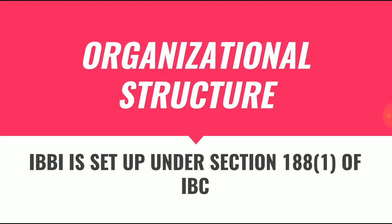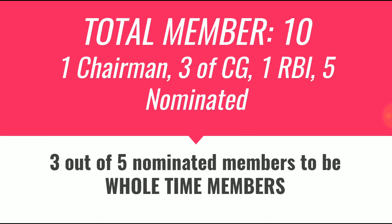Now let us understand the organizational structure of IBBI. IBBI is set up under section 188(1) of the Insolvency and Bankruptcy Code. There are totally 10 members: one chairman, three members of the central government, one ex-officio member nominated by the Reserve Bank of India, and five members nominated by the central government. Of these five members, three have to be whole-time members — they cannot be part-time or honorary members.